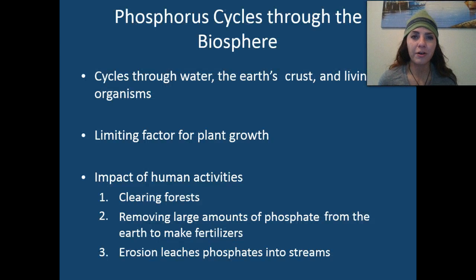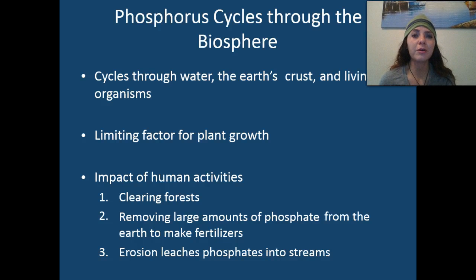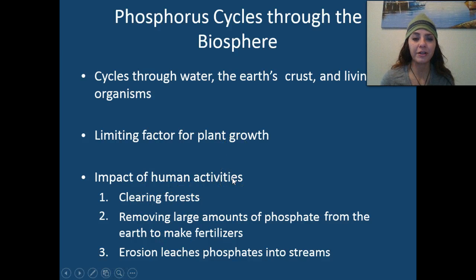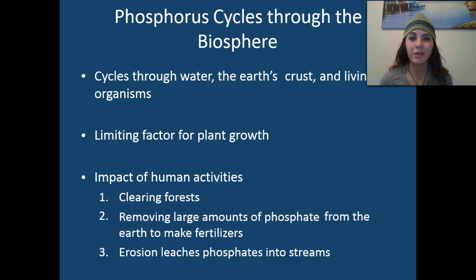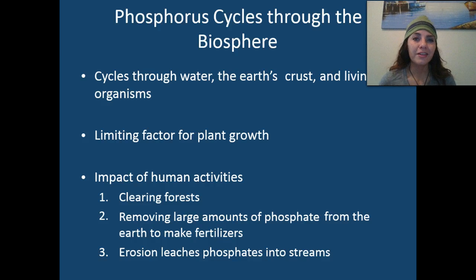First, we're going to start with the phosphorus cycle. Phosphorus cycles through water, the Earth's crust, and living organisms. It's a limiting factor for plant growth, and humans impact it in various ways. We impact the phosphorus cycle by clearing forests and by removing large amounts of phosphate from the Earth to make fertilizers to fertilize our agricultural crops. This in turn causes erosion that leaches phosphates into our water system.